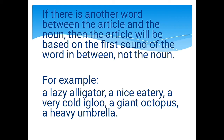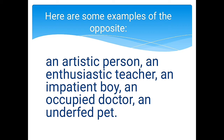If there is another word between the article and the noun, the article is based on the first sound of the word in between, not the noun. For example: a lazy alligator, a nice eatery, a very cold igloo, a giant octopus, a heavy umbrella — even though the nouns begin with vowels, the first word after the article begins with a consonant. Conversely: an artistic person, an enthusiastic teacher, an impatient boy, an occupied doctor, an underfed pet — the first word after the article begins with a vowel.